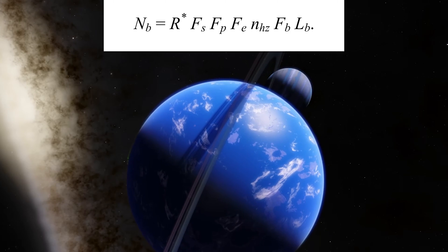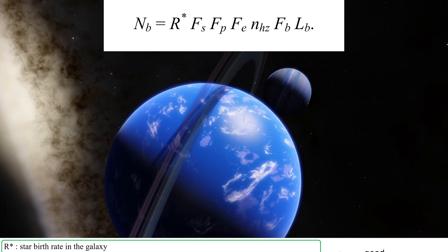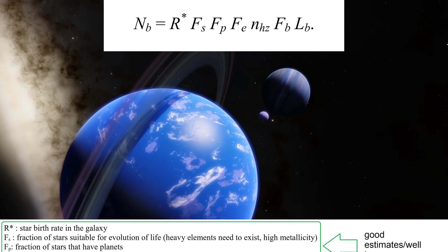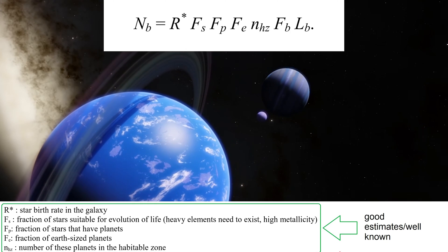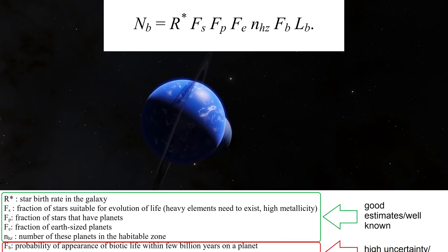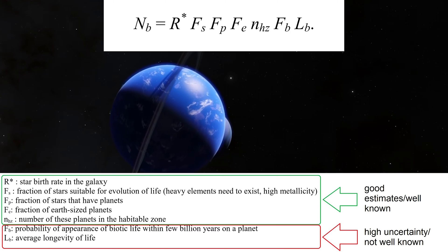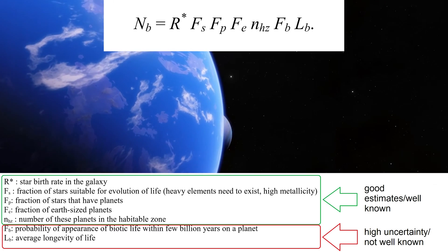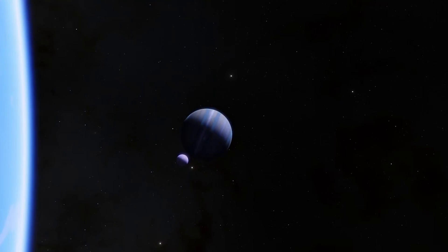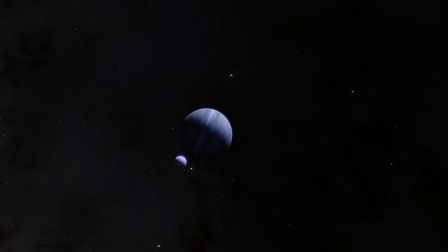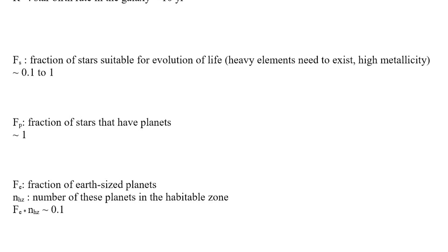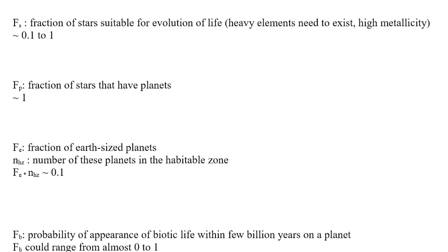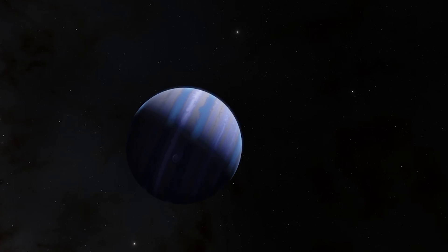Some of the parameters we know very well. Among those are the star birth rate in the galaxy, the fraction of stars suitable for the evolution of life, the fraction of stars that have planets, the fraction of Earth-sized rocky planets, and the number of these planets in the habitable zone of their parent star. Less known are the biological factors, which determine the probability for life arising on a planet with the right conditions, and the average longevity of life. A 2014 paper estimates Nb using data from the now defunct Kepler Space Telescope and best estimations for the unknown factors. The result is that there are between millions and billions of planets with life in the galaxy alone.